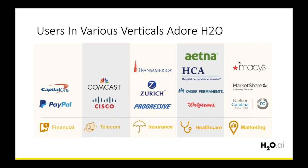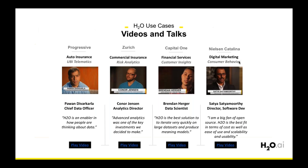As much as community growth is amazing, we really care about paying customers. We have a lot of household names across verticals — financial services, telecom, insurance, healthcare, and marketing — mostly Fortune 500 companies. Customers who have presented at our user conferences include folks from Progressive, Zurich, Capital One, Kaiser, PayPal, Transamerica, and MarketShare, sharing their machine learning use cases.